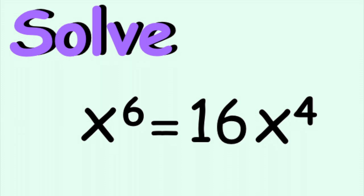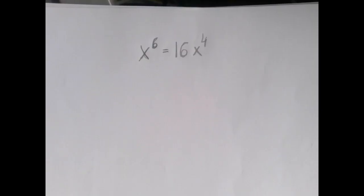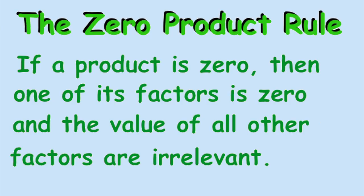This equation happens to be a degree 6 equation. If the equation is of a higher degree than 1, so higher than linear, then the only way we can approach it is the zero product rule, which means we have to wipe out one side to zero, attempt to factor the other side, and apply the zero product rule.